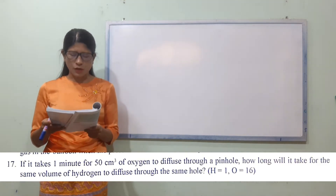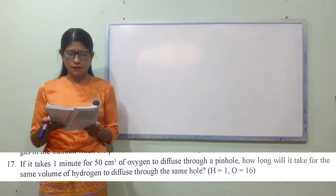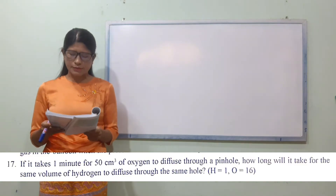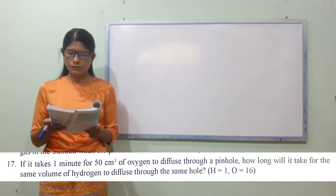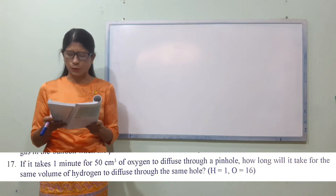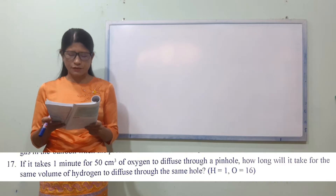If it takes 1 minute for 50 cm³ of oxygen to diffuse through a pinhole, then how long does it take for the same volume of hydrogen to diffuse through the same hole?